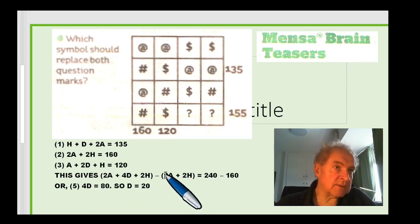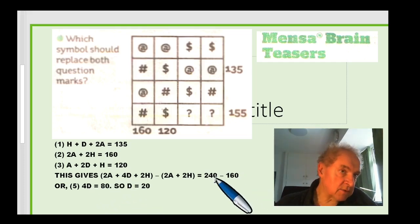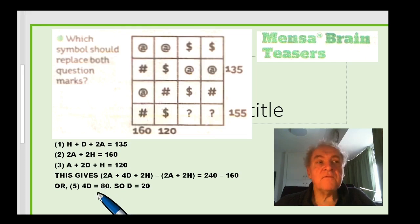So if we turn through that, we've got 2a minus 2a, we've got 4d, and there's no d's here, and you've got 2h minus 2h. So we're just left with 4d on the left hand side, and then on the right hand side, we've got 240 minus 160, which is 80. So 4d equals 80, then d equals 20.